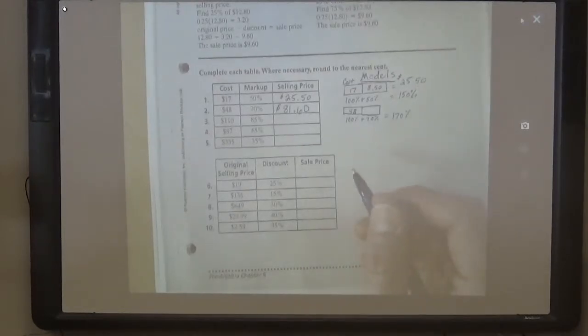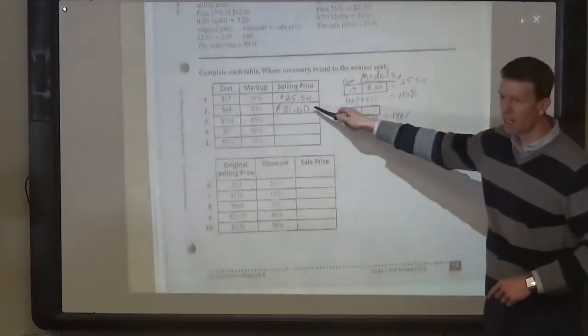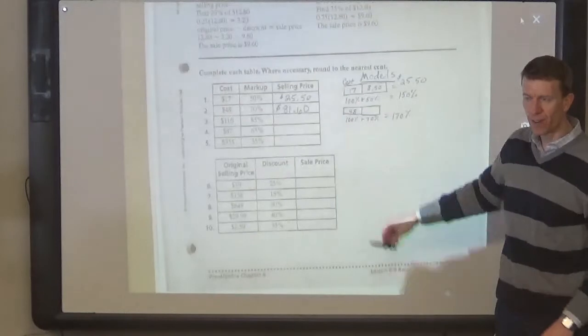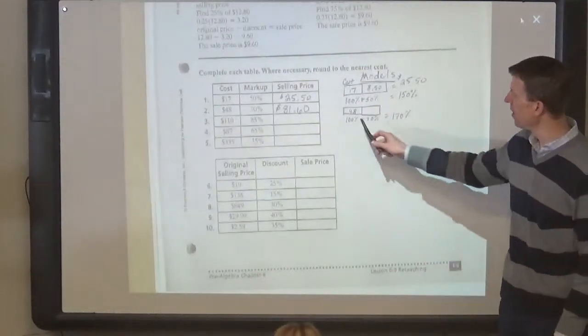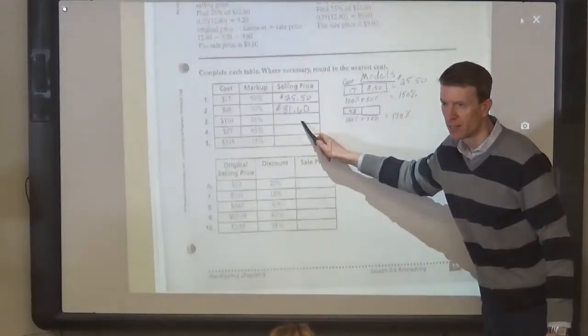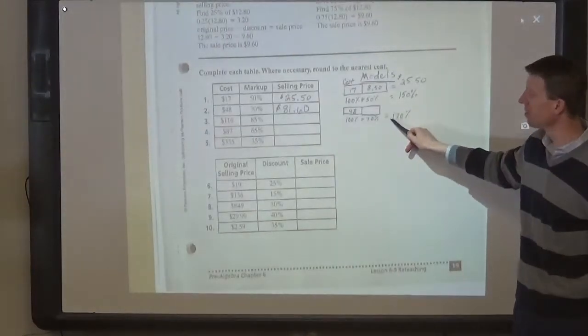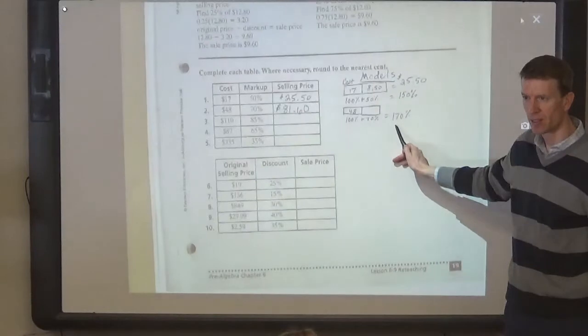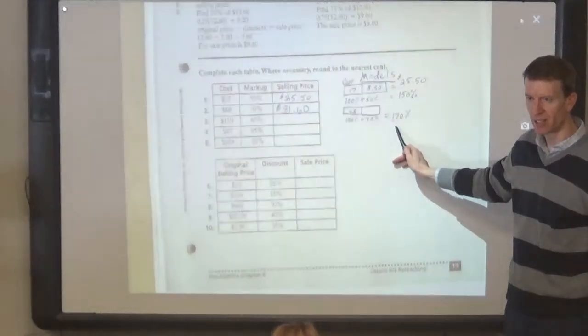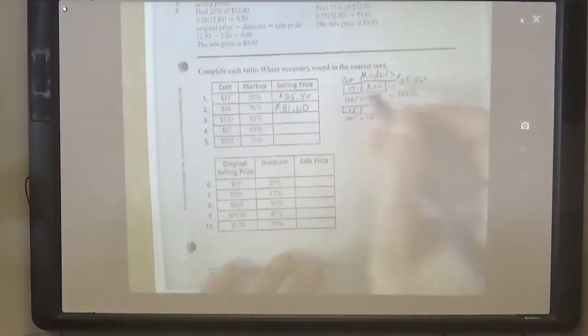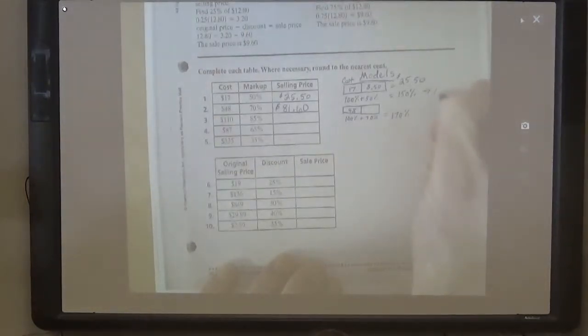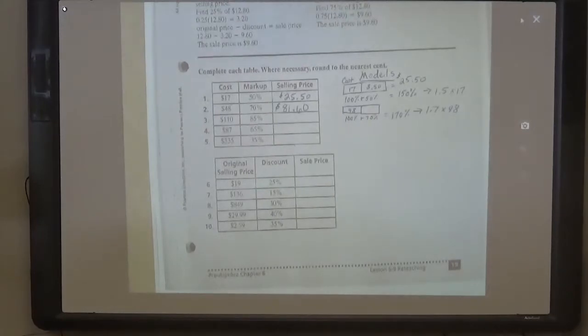Alright, let's go down to the sale price then. Does everyone know how to find the selling price now? Is everyone comfortable with finding the selling price? You can either find the percent of the cost and then add it, or you can find the total percent of the cost and multiply it. Questions on this? So for the first one we use 150%, which would be 1.5 times 17. For the second one it's 170%, so we use 1.7 times 48. Any questions?